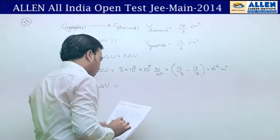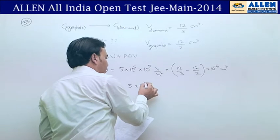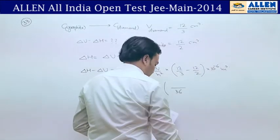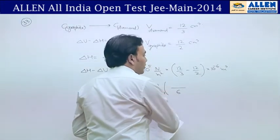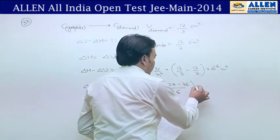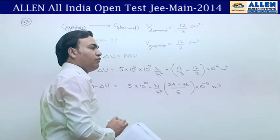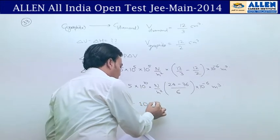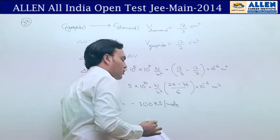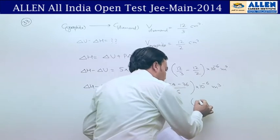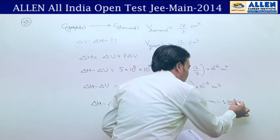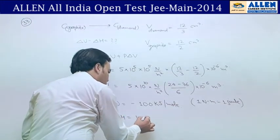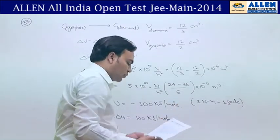So delta H minus delta U equals 5 × 10⁻⁶ m³ times 10⁵ N/m², which gives -100 J. Since 1 Nm equals 1 J, delta H minus delta U equals -100 kJ/mol. Therefore delta U minus delta H equals 100 kJ/mol. This is given in the first option, so answer 1 is correct.